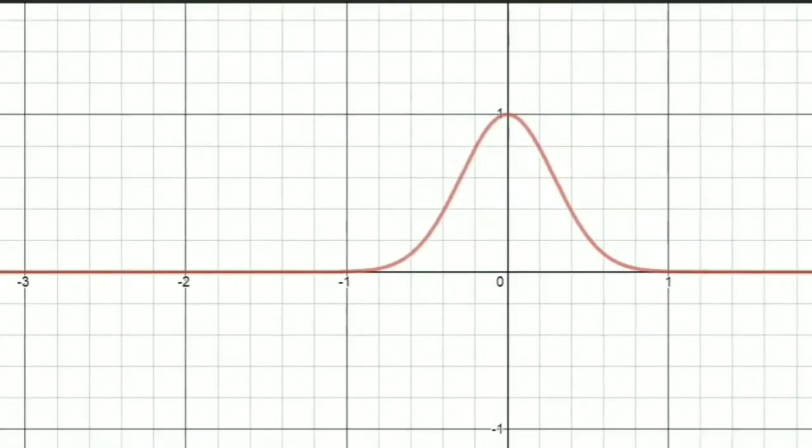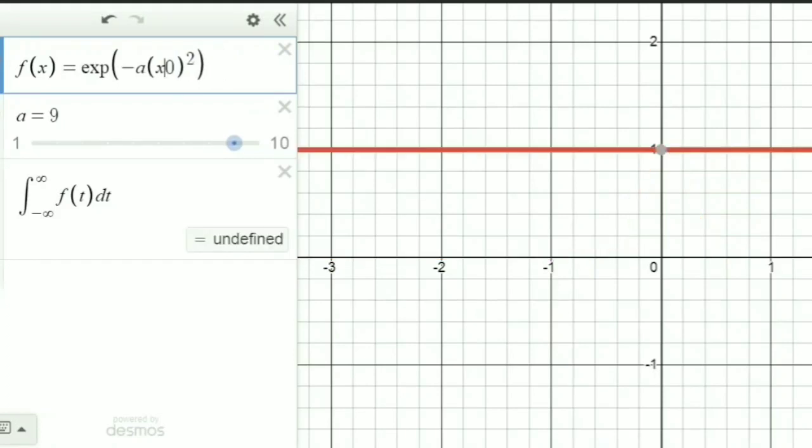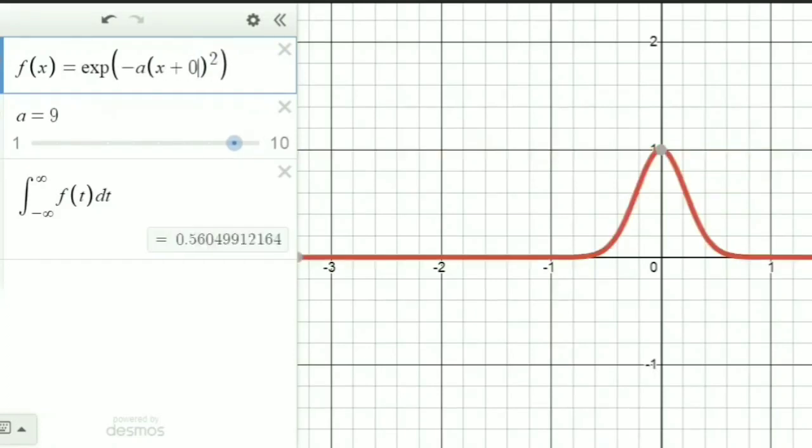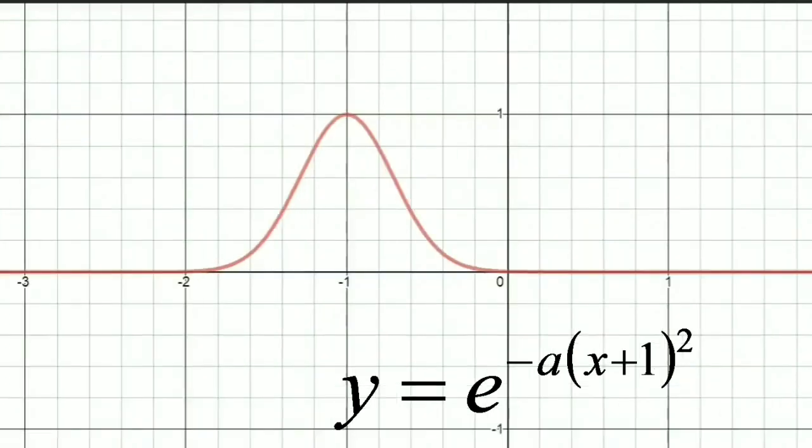Now, if we want to change the center from 1 to minus 1, what we have to do is replace the x with x plus 1. So we will get a Gaussian curve whose center has been shifted to minus 1 from 1.